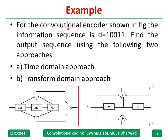Let us take one example. For the convolutional encoder shown in the figure, the information sequence is given as d equal to 10011. Find the output sequence using two methods: one is the time domain and the other is the transform domain — both yield the same result.